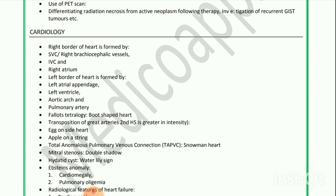Cardiology: The right border of the heart is formed by the superior vena cava, right brachiocephalic vessels, inferior vena cava, and right atrium. The left border of the heart is formed by the left atrial appendage, left ventricle, aortic arch, and pulmonary artery.